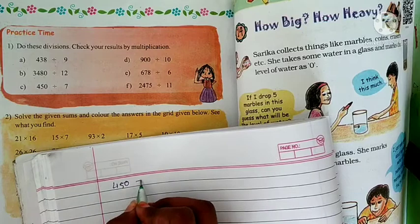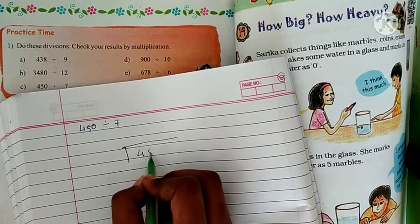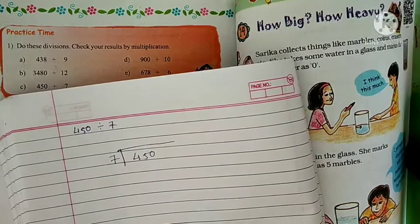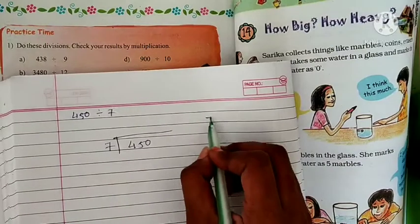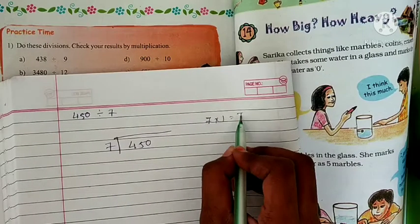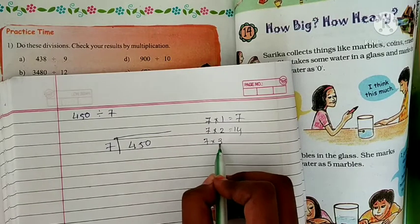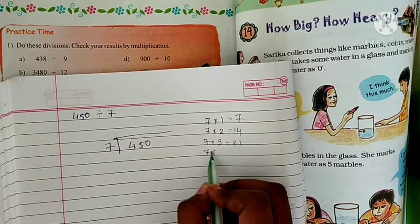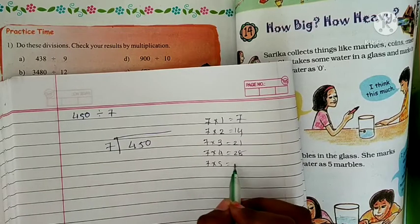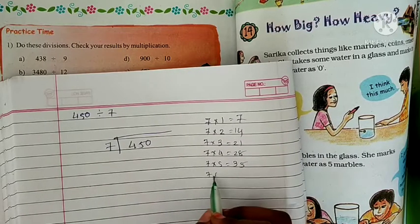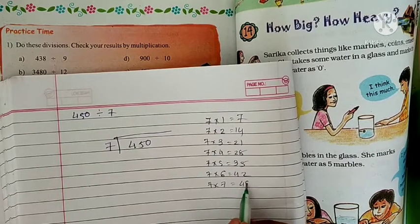450 divided by 7. How are we going to do it? First, 7 times 1 is 7, 7 times 2 is 14, 7 times 3 is 21, 7 times 4 is 28, 7 times 5 is 35, 7 times 6 is 42, 7 times 7 is 49.